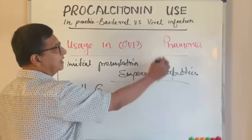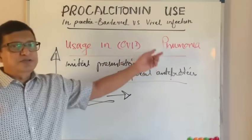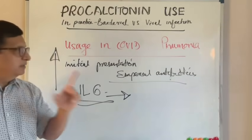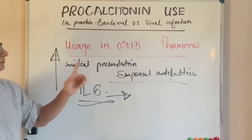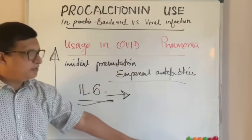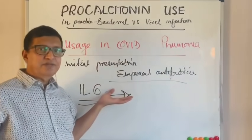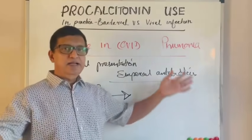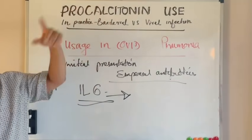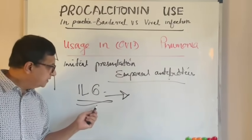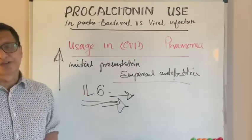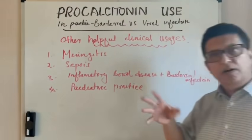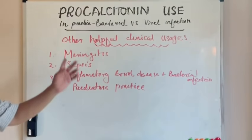Procalcitonin is helpful in distinguishing COVID pneumonia from bacterial pneumonia, but remember that in atypical pneumonia, procalcitonin levels could be low. So we need clinical judgment, X-ray findings, other blood findings, and proper history. With all these combined with procalcitonin, we can reach a conclusion whether to prescribe interleukin-6 antagonists or not.